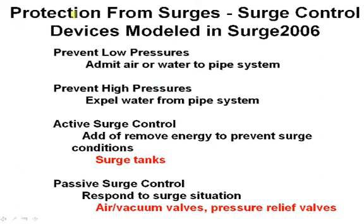How do you protect the system? There are several devices that we can use, and Surge 2000 will deal with most of these devices. The devices are designed to prevent low pressure by putting air or water into the system, or prevent high pressure by expelling air or water from the pipe system. Active surge control will actually prevent the surge condition, and you need a surge tank or a similar device to provide energy to the system. Passive surge control may be less expensive but it doesn't prevent the surge — these are devices like air vacuum valves and pressure relief valves.